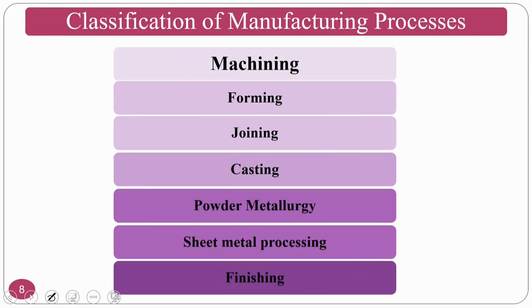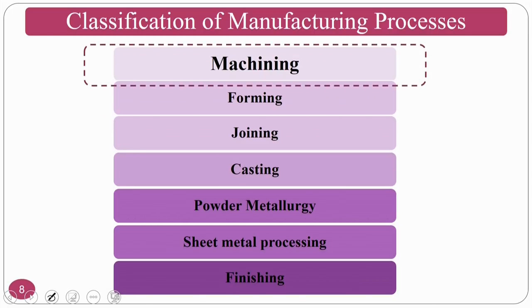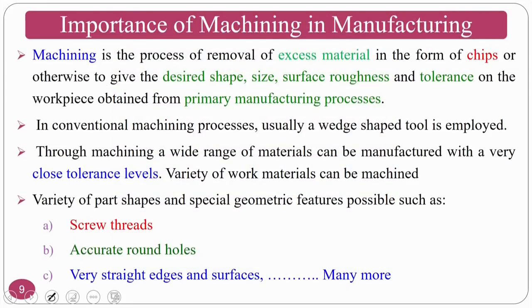The classification of manufacturing processes includes a variety of processes: machining, forming, joining, casting, powder metallurgy, sheet material processing, and finishing. Many more are emerging as the world progresses and new materials are coming. However, in this particular course we completely deal with machining processes only.